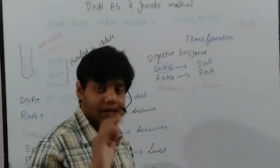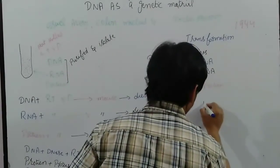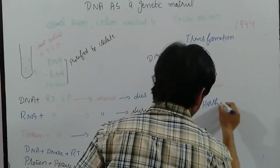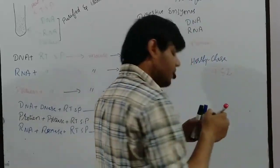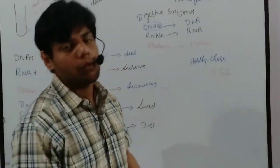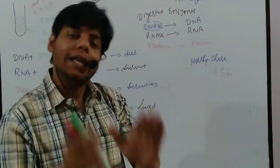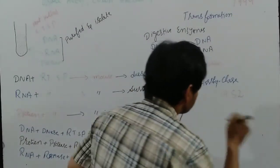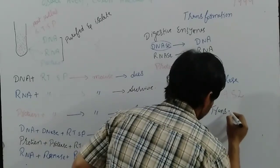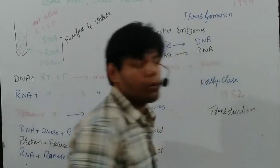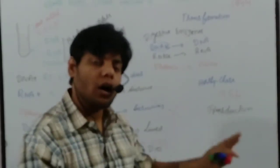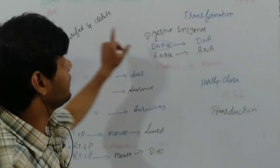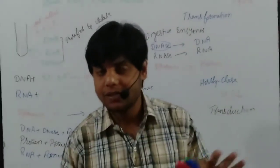The last scientists were Hershey and Chase. In 1952, these two scientists completely and 100 percent proved that DNA is a genetic material through what we call the transduction phenomena. We will talk about the transduction phenomena and the Hershey and Chase experiment in a future video.